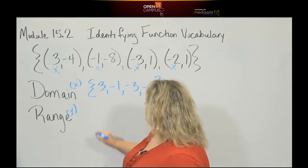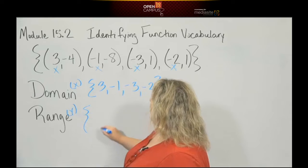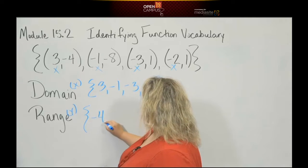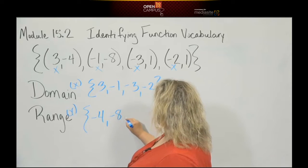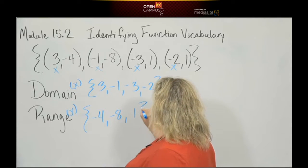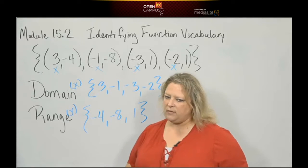For my range, my brace, I have negative four, negative eight, I have a one, and I have another one. But remember if it repeats you don't have to write it again.